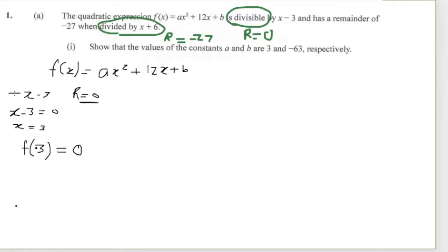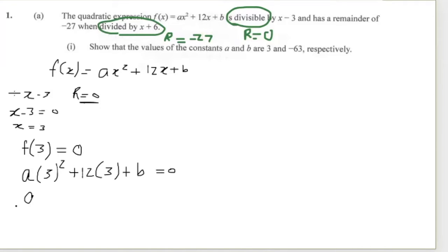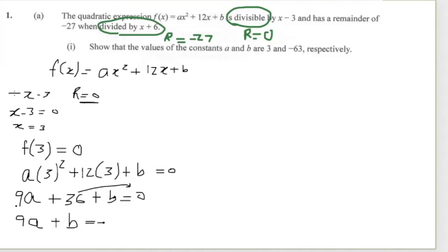Substituting x = 3 into the function: a(3)² + 12(3) + b = 0. Simplifying: 9a + 36 + b = 0, so 9a + b = negative 36. I will call this Equation 1.